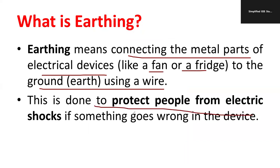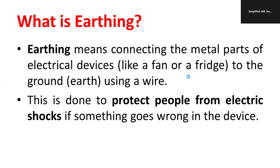Earthing is done to protect people from electrical shock. Suppose anything goes wrong and current flows through the metal body — if you touch it, the current will pass directly through your body and you'll get a shock. To overcome that, we provide a separate earth wire so that any fault current in the metal part passes directly through the earth wire to the ground instead of through a person, ensuring protection.